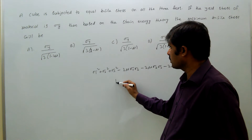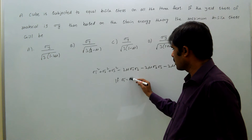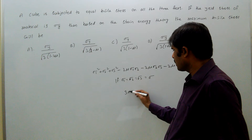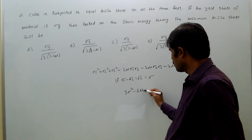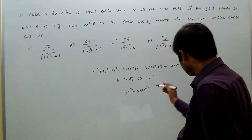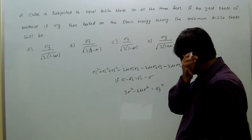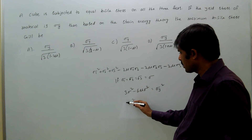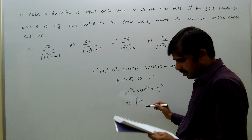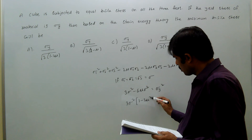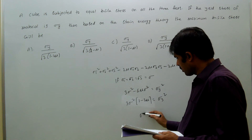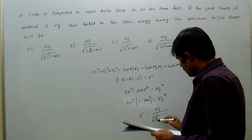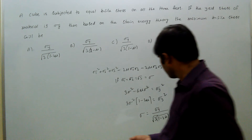Since sigma_1 = sigma_2 = sigma_3 = sigma, this gives: 3*sigma^2 - 6*mu*sigma^2 = sigma_y^2. Taking sigma^2 common: 3*sigma^2*(1 - 2*mu) = sigma_y^2. Therefore, sigma = sigma_y divided by root of [3*(1 - 2*mu)]. So the answer is Option A.